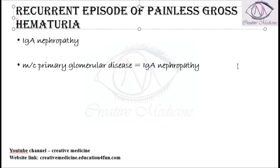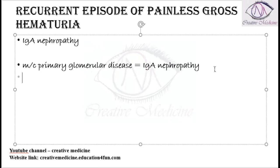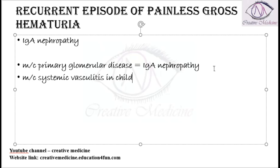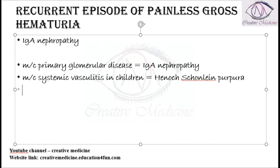If you were asked what is the most common systemic vasculitis in children, the answer is Henoch-Schönlein Purpura — it is the most common systemic vasculitis in children.